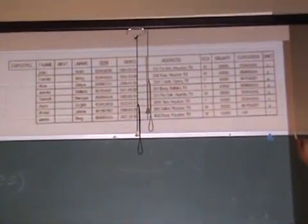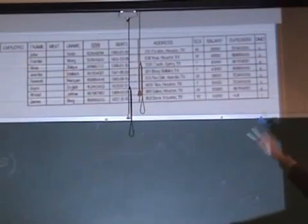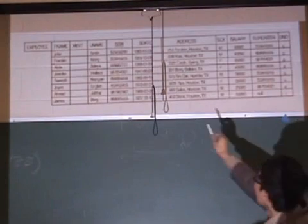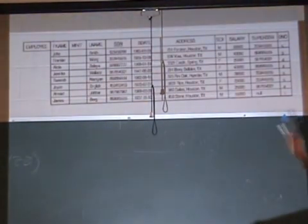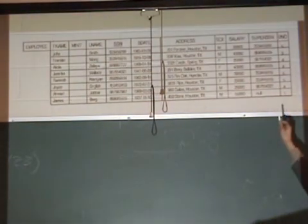John is equal to 30K, probably not be returned. Franklin, 40K will be returned. The next, Alice, no. And the next, Jennifer will be returned. Ramel will be returned. As long as their salary is bigger than 30K, they will be returned, like John.